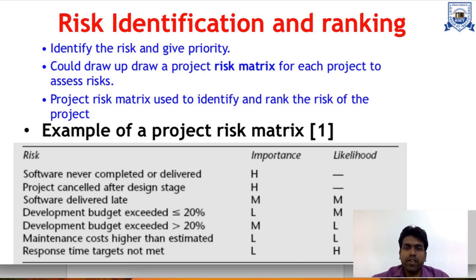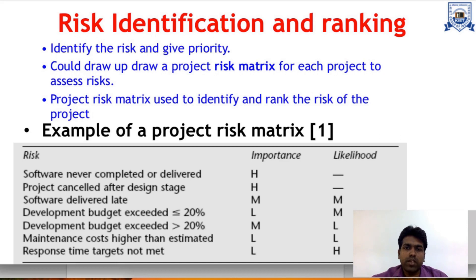Coming to the identification and ranking of risk. First we identify the risk, then provide the priority based on how much it is going to affect the project. We can draw a risk matrix for each project to assess the risk, providing the weightage or ranking of each risk — higher, medium, or lower priority — along with the likelihood that the risk will occur in the future.